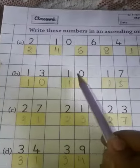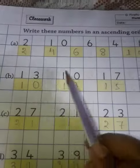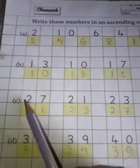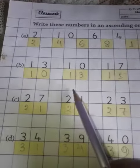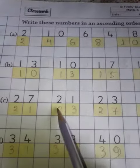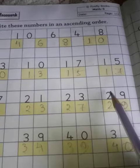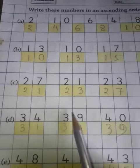Then 13, 10, 17, 15. First we have to write 10, 10 is the smallest number, then 13, then 15, then 17. 27, 21, 23, 29. Smallest number is 21, then 23, then 27, and last one is 29. 29 is the biggest number.